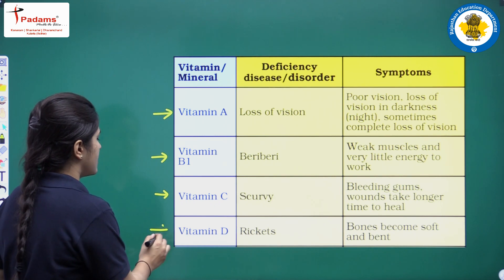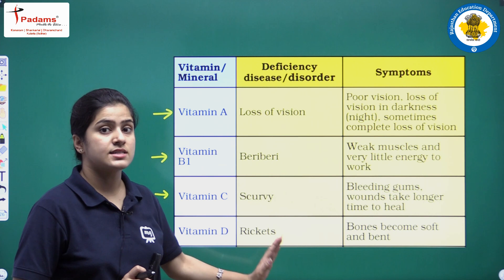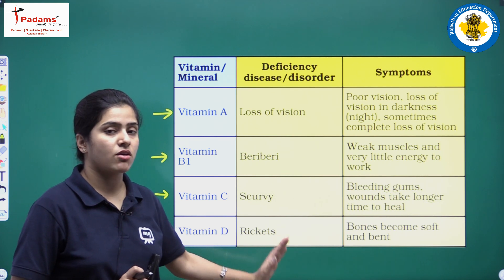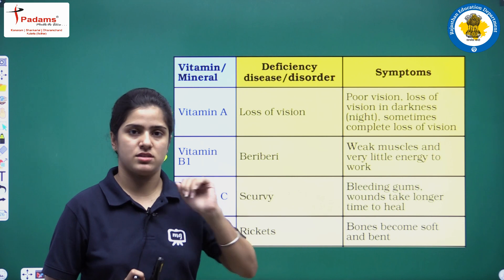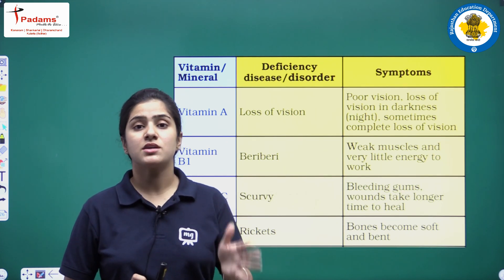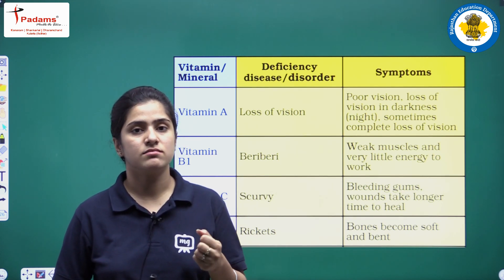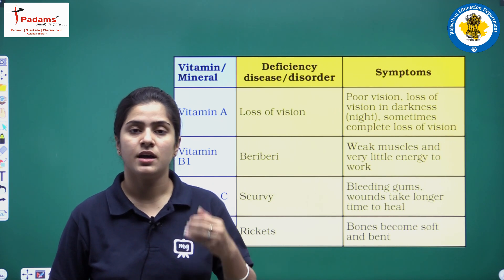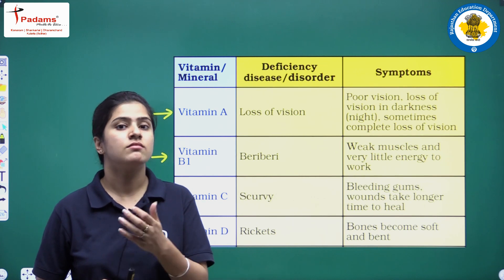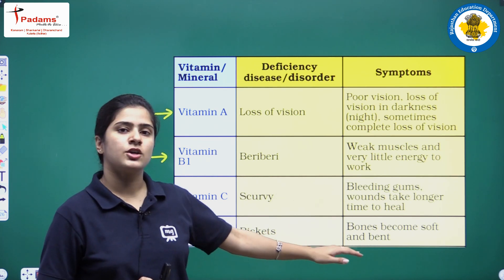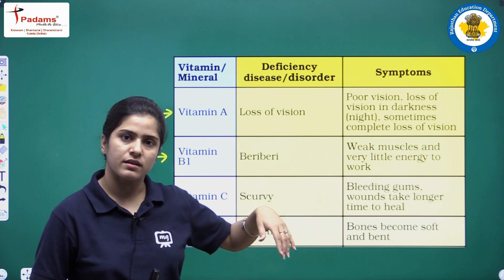Next, vitamin D. Deficiency of vitamin D causes rickets. Because of rickets, your bones will become soft and they will bend. We know that vitamin D keeps your bones, gums, and teeth healthy, so its deficiency leads to soft, bending bones.